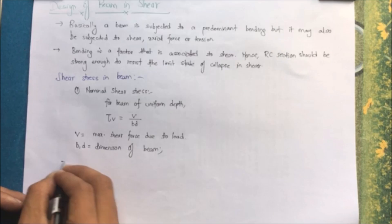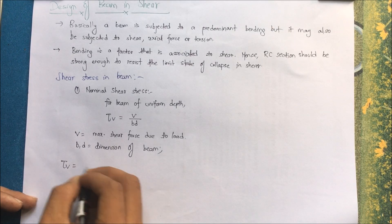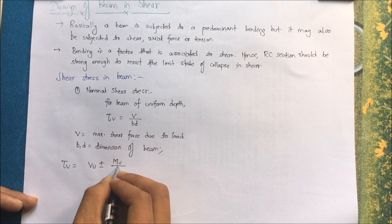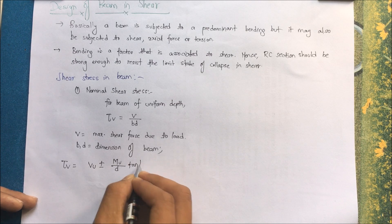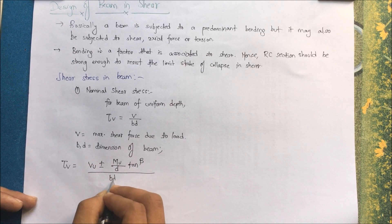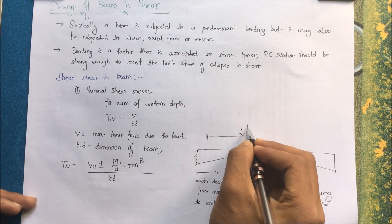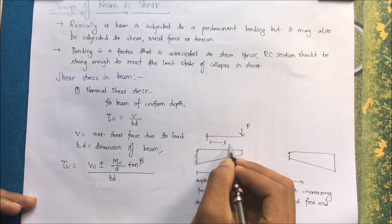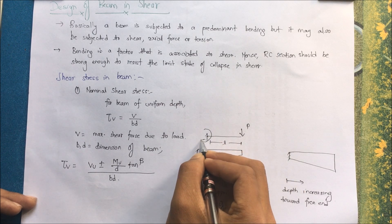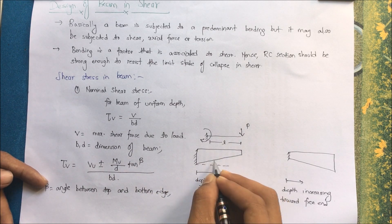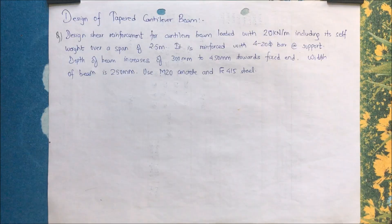For a normal beam of uniform depth, we calculate shear stress as tau_v = V / (b·d). But for a tapered section, tau_v = (V_u ± M_u·tan(β)) / (b·d), where V_u is the shear force, M_u is the moment at the section, and β is the angle between the top and bottom faces of the beam.